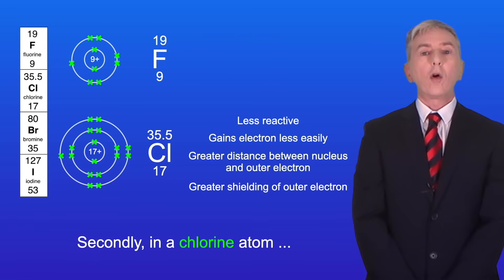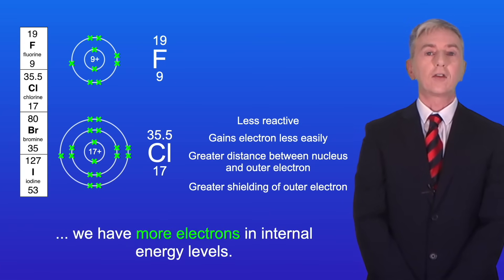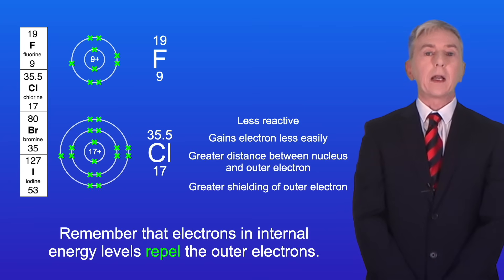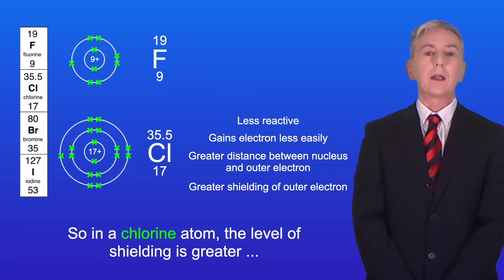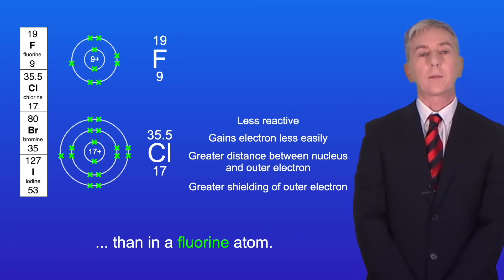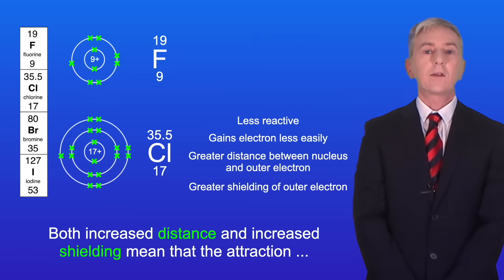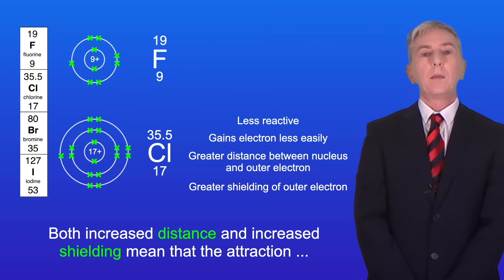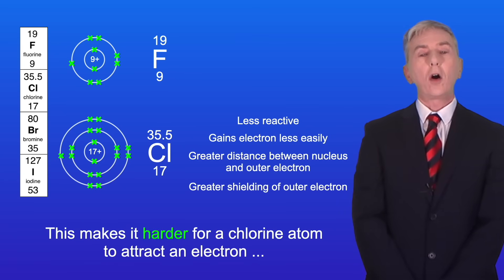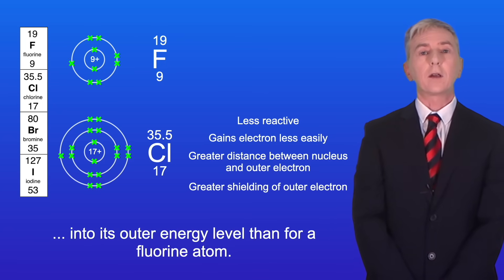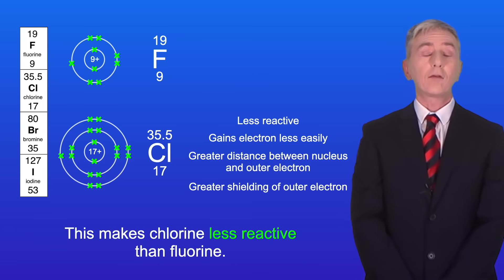Secondly, in a chlorine atom we have more electrons in internal energy levels. Remember that electrons in internal energy levels repel the outer electrons — scientists call this shielding. So in a chlorine atom the level of shielding is greater than in a fluorine atom. Both increased distance and increased shielding mean that the attraction between the outer electrons and the nucleus is lower in a chlorine atom, making it harder to attract an electron into its outer energy level, and this makes chlorine less reactive than fluorine.